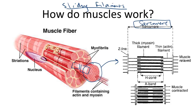Let's look at this sarcomere. The thick black line in the sarcomere is called myosin — it is a protein filament. And the thin black line is called actin — it is another protein filament.